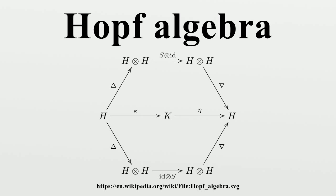If a bi-algebra B admits an antipode S, then S is unique. The antipode is an analogue to the inversion map on a group that sends g to g⁻¹. A Hopf subalgebra A of a Hopf algebra H is a Hopf subalgebra if it is a sub-coalgebra of H and the antipode S maps A into A. In other words, a Hopf subalgebra A is a Hopf algebra in its own right when the multiplication, comultiplication, and antipode of H are restricted to A.